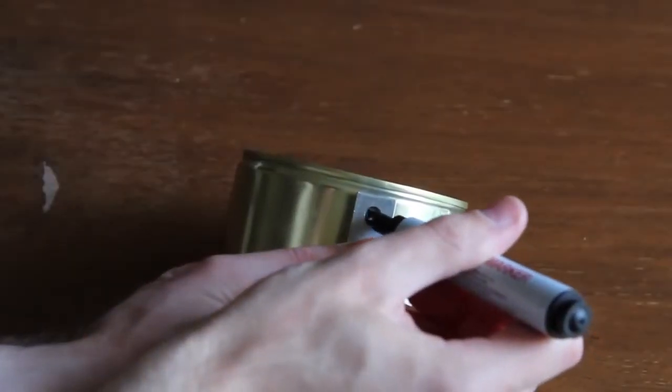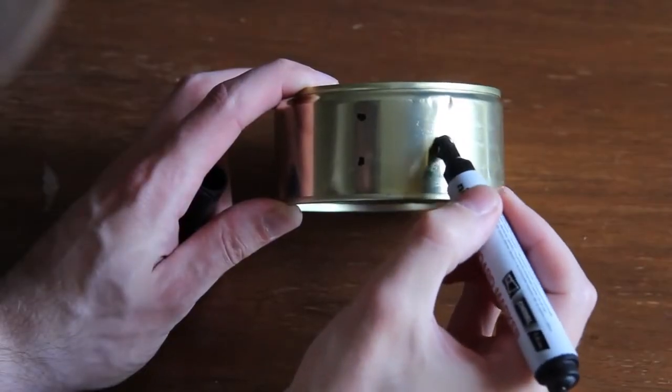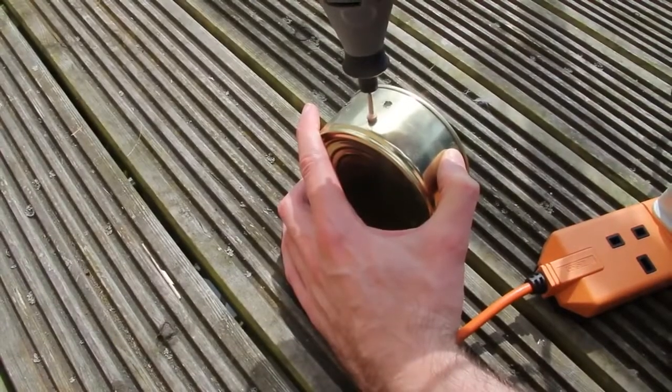Mark the position of the holes. We need two holes for the angles and one for the guitar jack. Drill the holes and remove the edges.